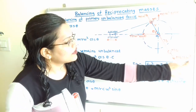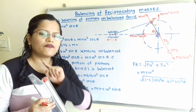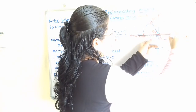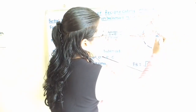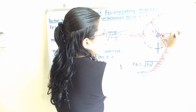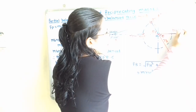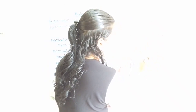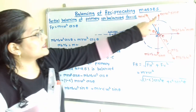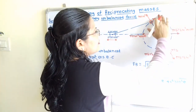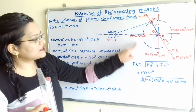For the centrifugal force of the balancing mass, there are two components — horizontal and vertical. Since the balancing mass is diametrically opposite, the horizontal component is Mb·Rb·ω²·cos θ and the vertical component is Mb·Rb·ω²·sin θ. The vertical component of M does not affect the reciprocating parts, so we remove it and consider only the remaining three components.